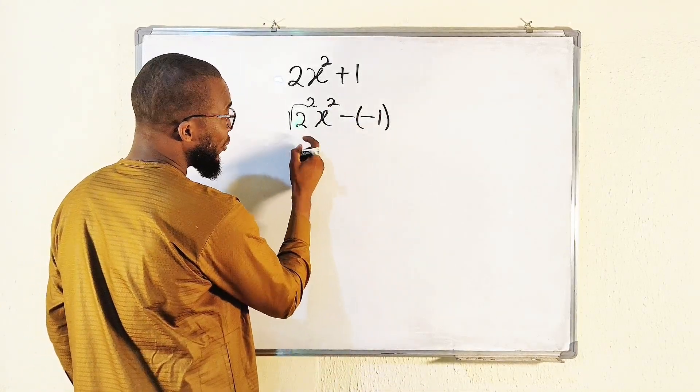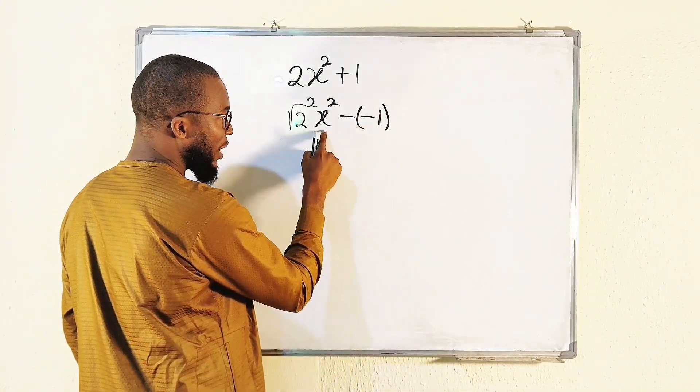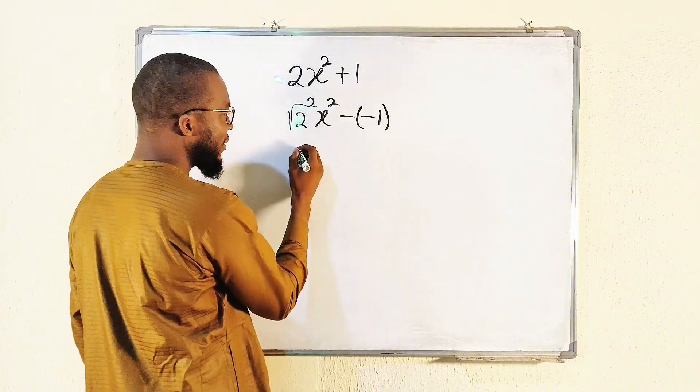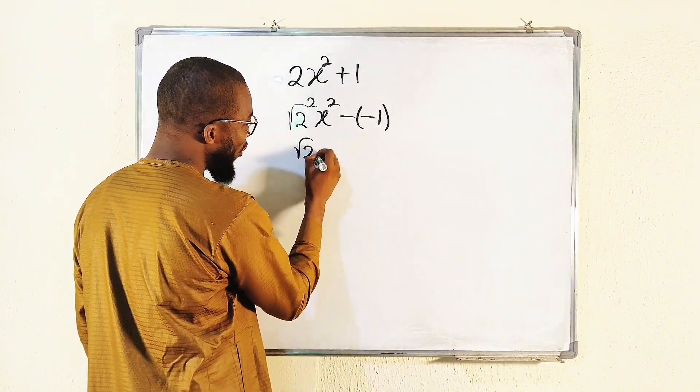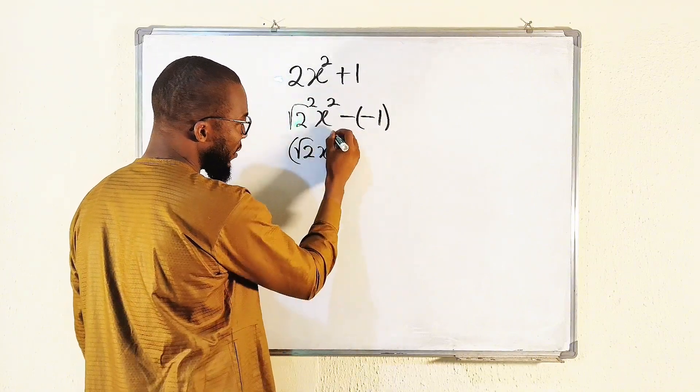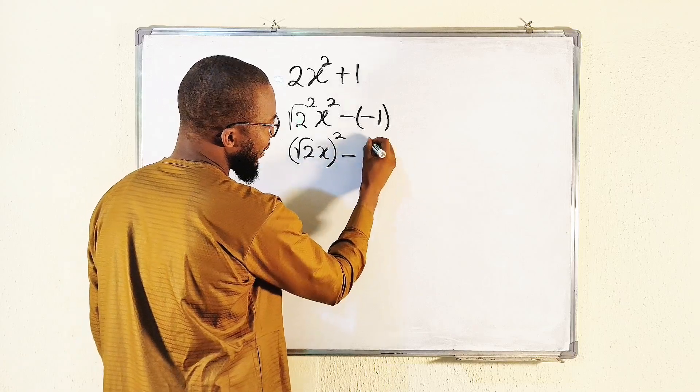So this is, according to one of the laws of indices, we can combine this since they have the same exponent. So we have root of 2x whole squared minus i squared.